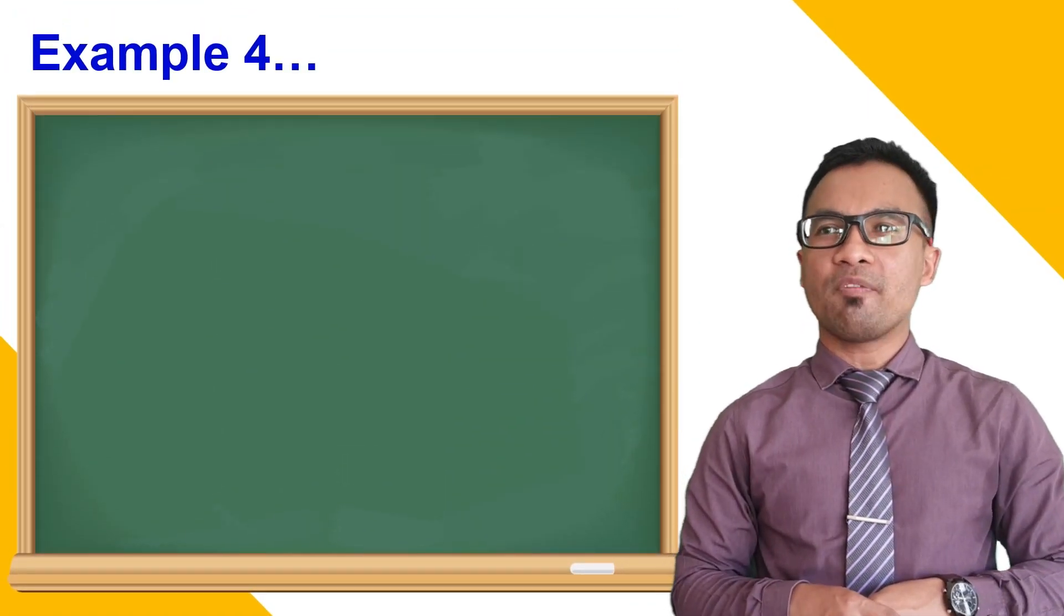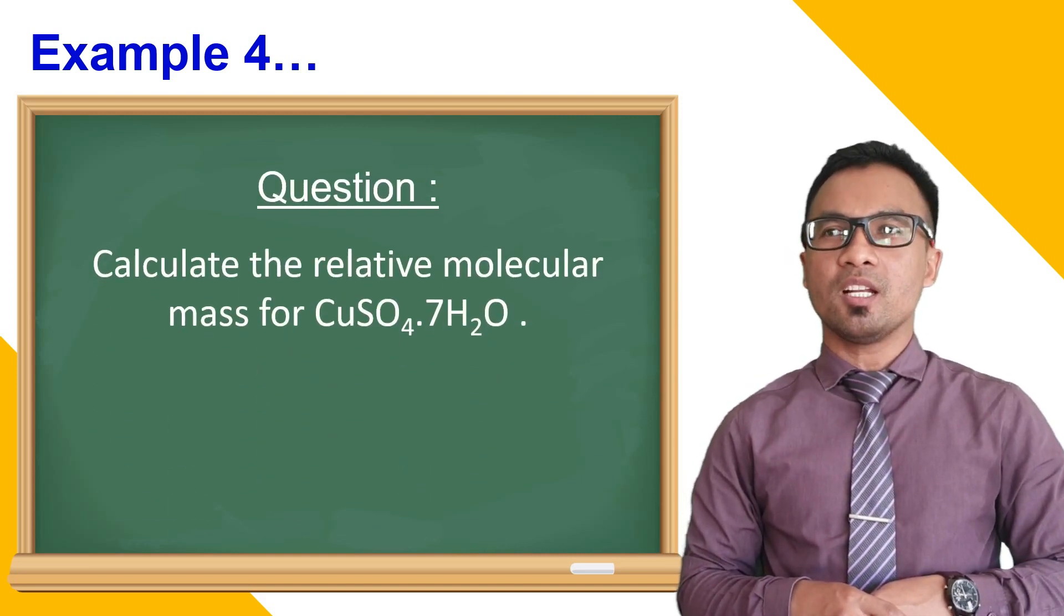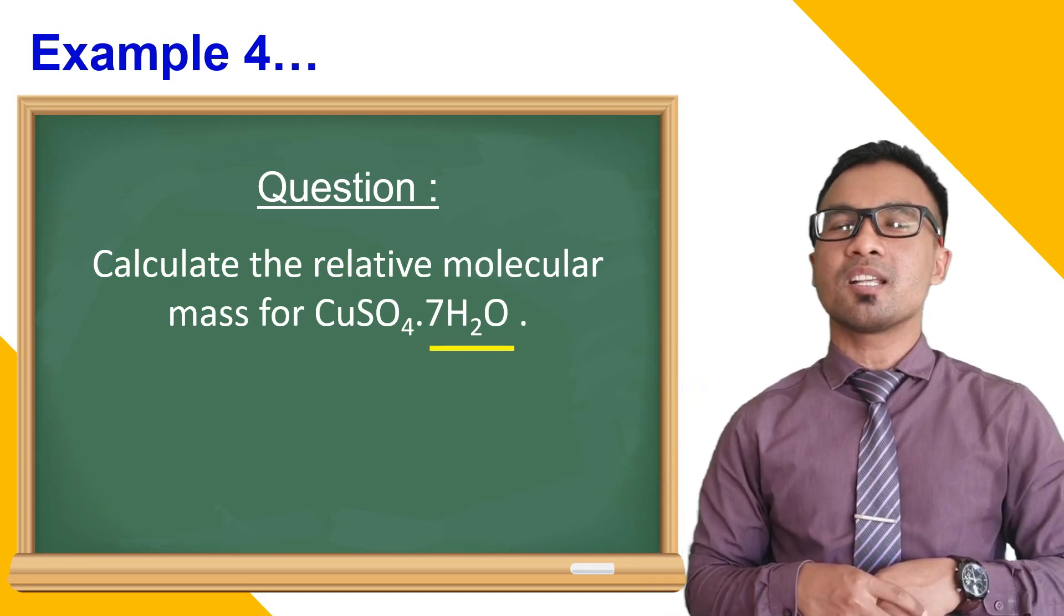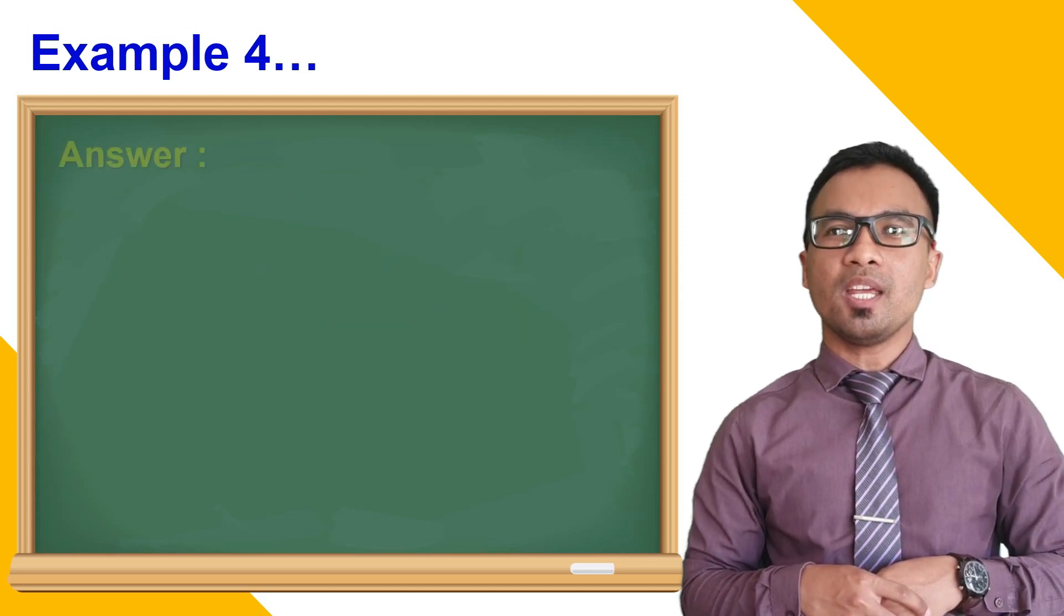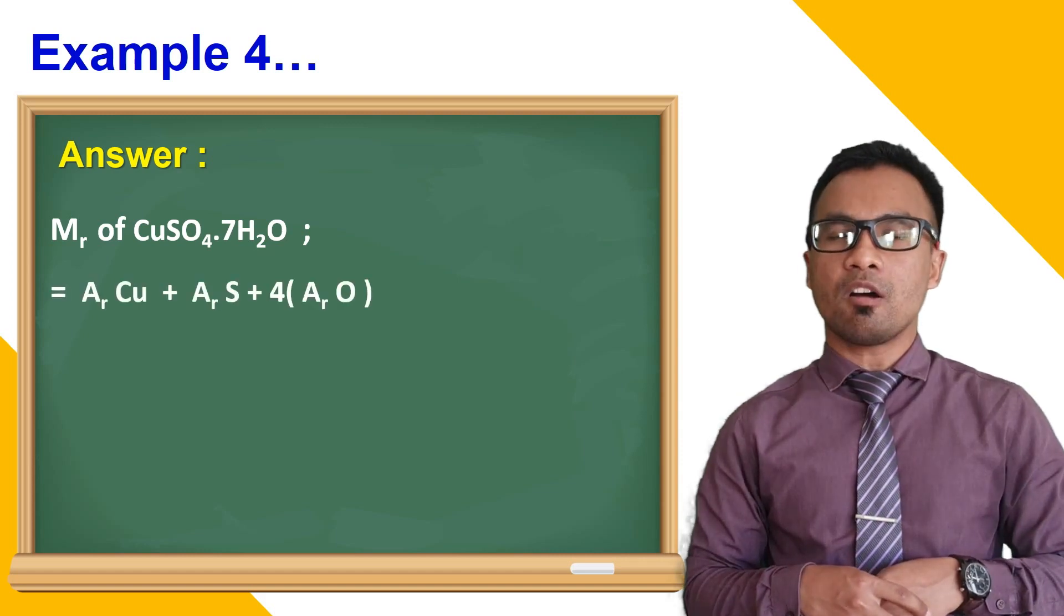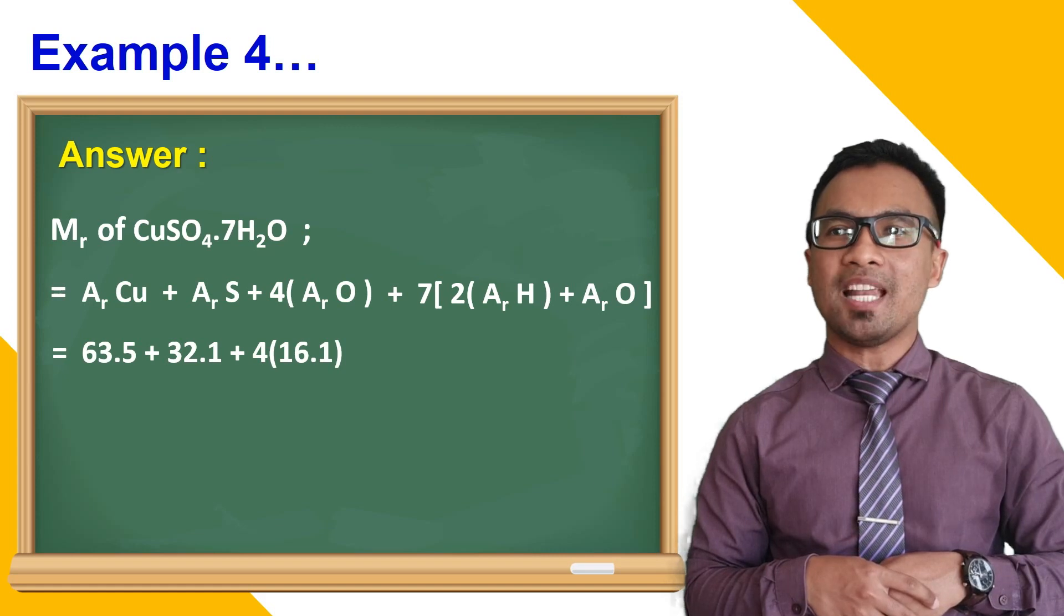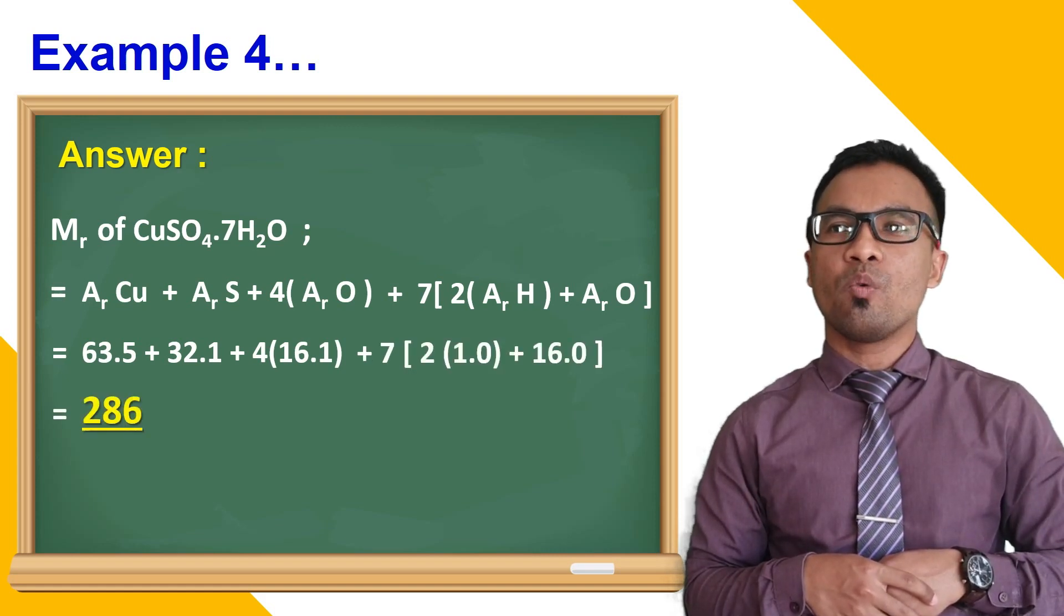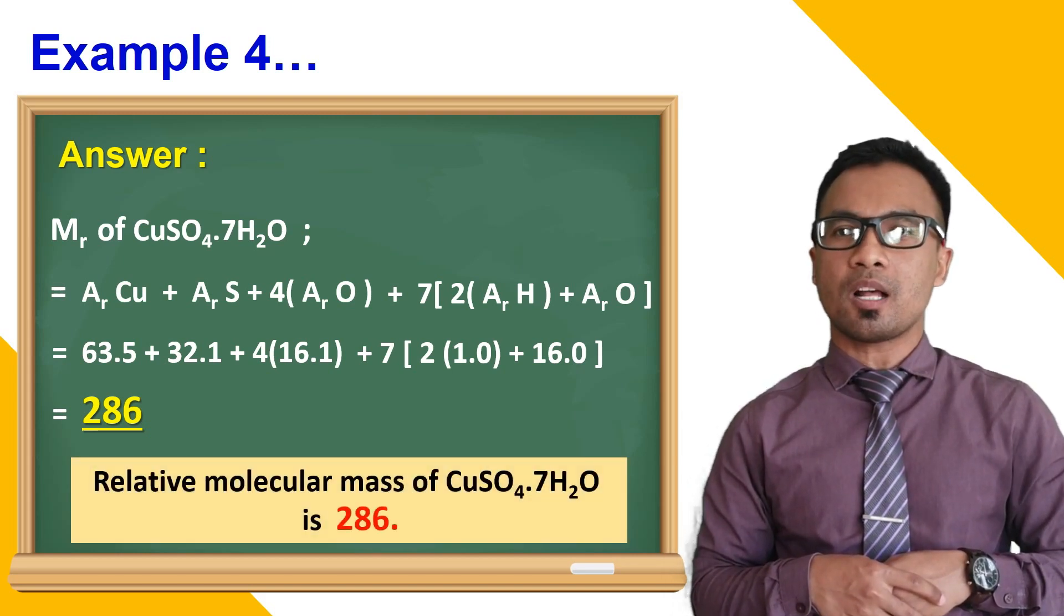Here, we have another example, copper 2 sulfate. From the molecular formula, there are 7 molecules of water surrounding the copper 2 sulfate. In such a case, to determine the relative molecular mass, we need to add up the relative atomic mass of 7 water molecules to all the relative atomic mass of elements present. And, by doing so, we have calculated the relative molecular mass of hydrated copper 2 sulfate.